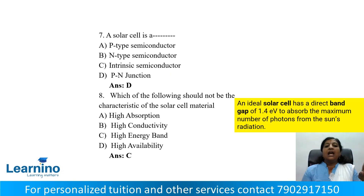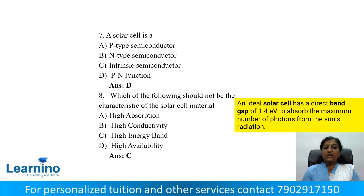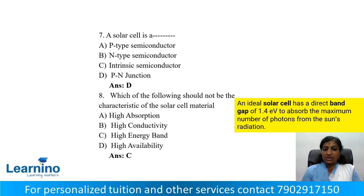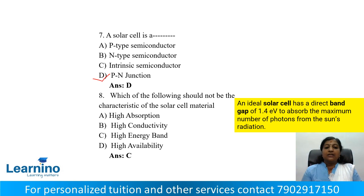Question number 7: A solar cell is — option A: P type semiconductor, option B: N type semiconductor, option C: intrinsic semiconductor, option D: P-N junction. A solar cell is basically a P-N junction, so the correct answer is option D.